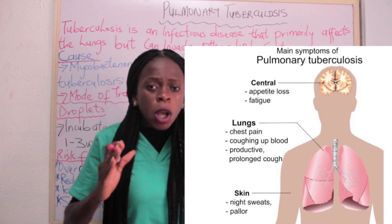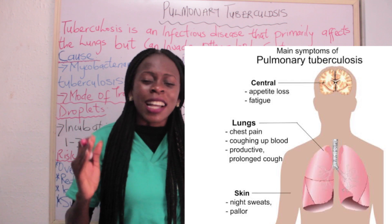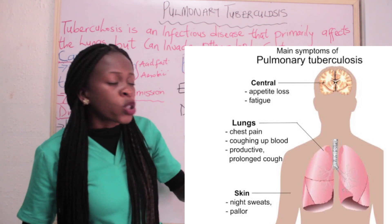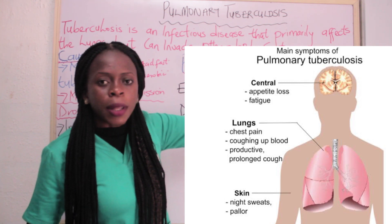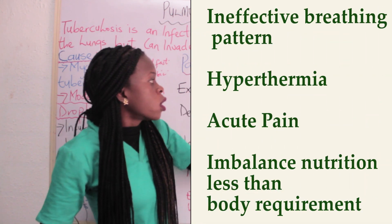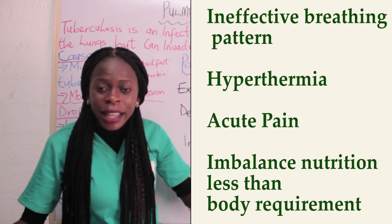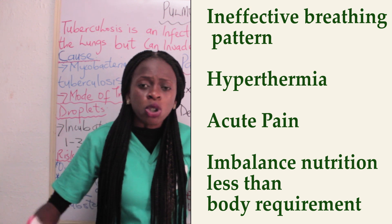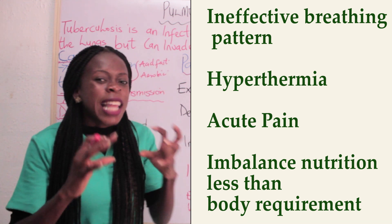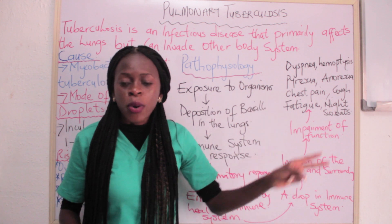From the signs and symptoms of pulmonary tuberculosis, you should calculate the nursing diagnoses. Looking at the signs and symptoms, there is dyspnea, so in the nursing diagnosis we will have ineffective breathing pattern. We are also going to have hyperthermia, acute pain, and imbalanced nutrition less than body requirements.